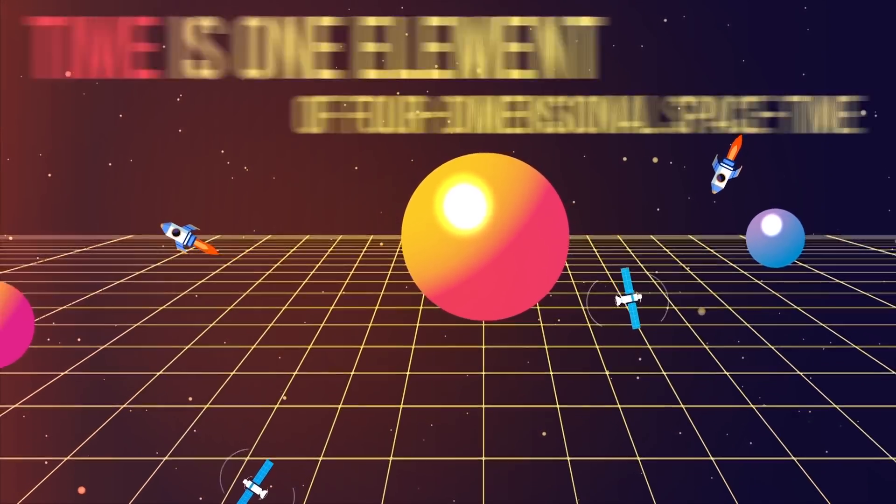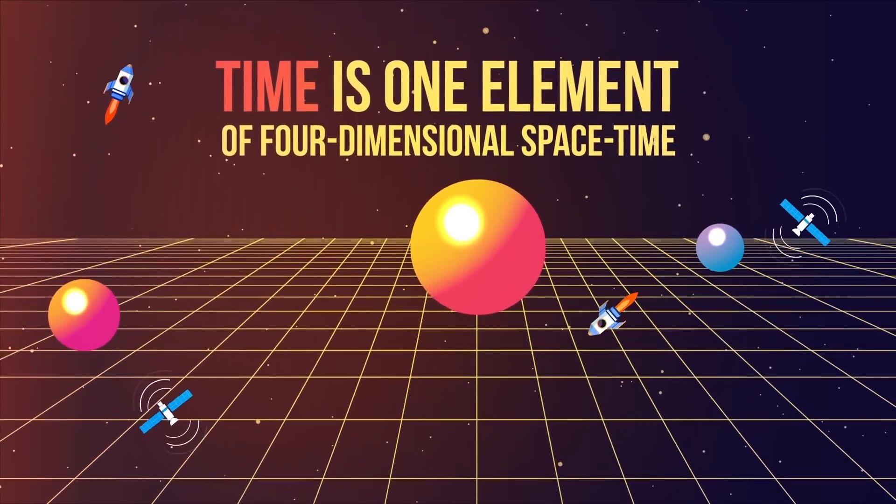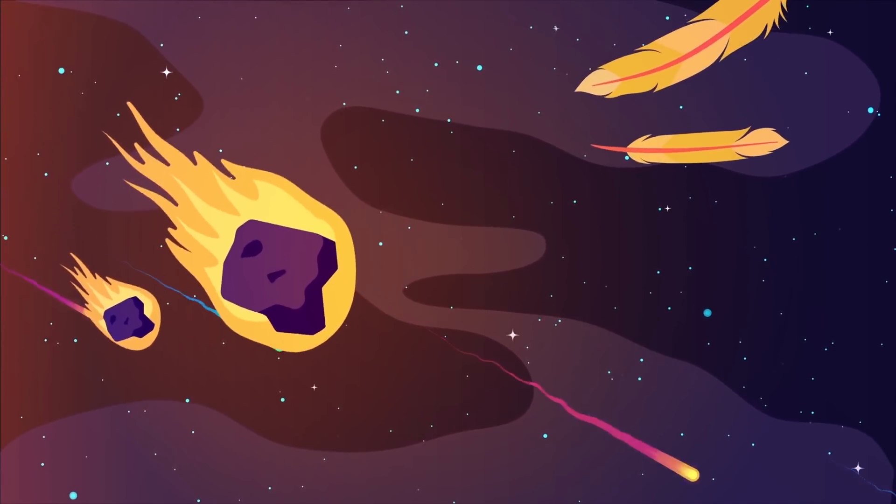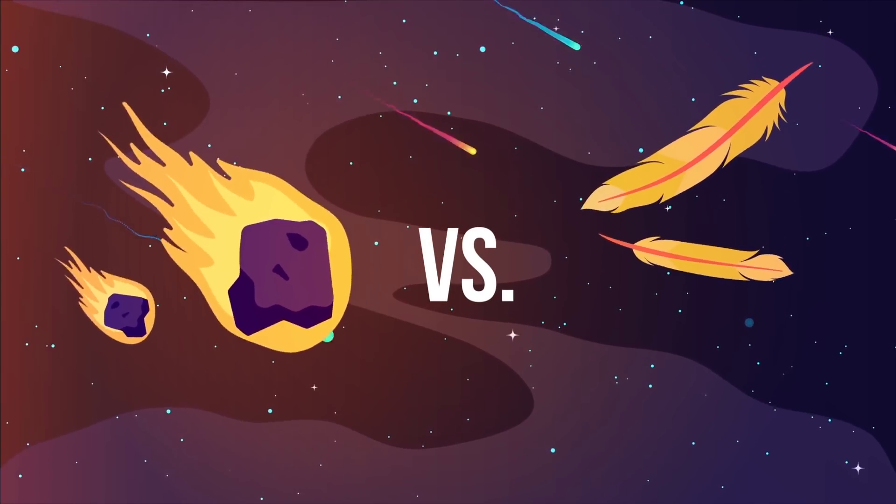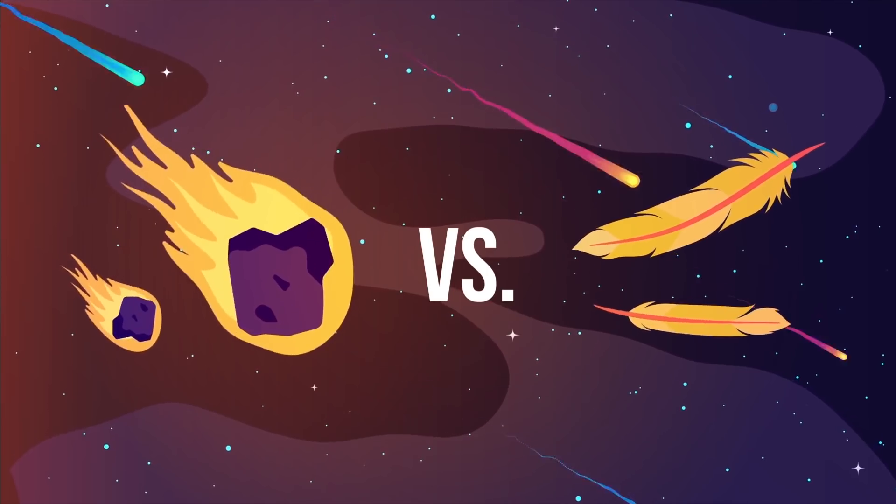The theory of relativity sees time as one element of four-dimensional space-time and can be influenced by other factors. Objects moving at high speed, for example, experience time slower than those moving with less velocity. And there's a similar effect for objects held within gravitational fields.